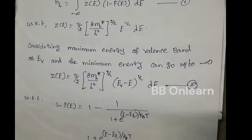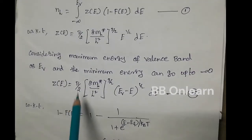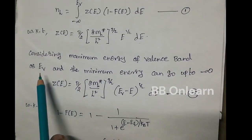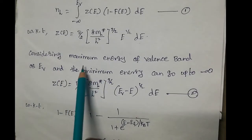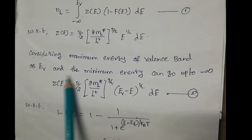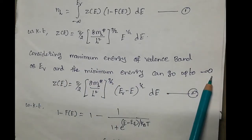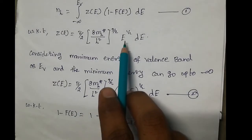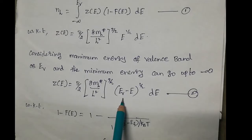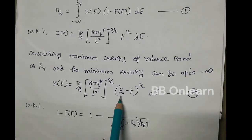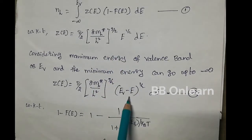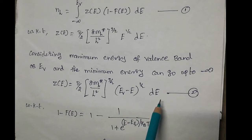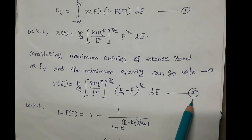Now considering the integration: the maximum energy of the valence band is Ev, and the minimum energy goes down to minus infinity. The energy variable e in the integrand is rewritten as Ev minus e, that is e = Ev − e. This is equation number 2.